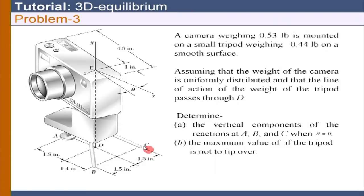For the first part, the answers are: RA = 0.656, and BY and CY should be equal with a value of 0.157.